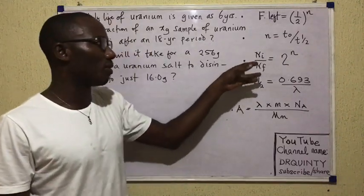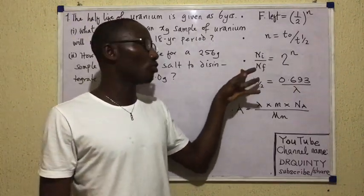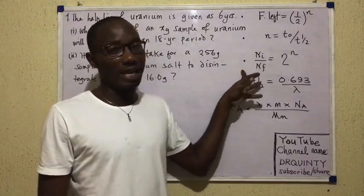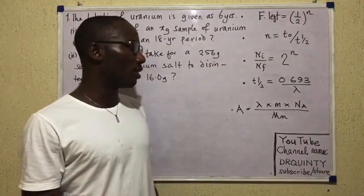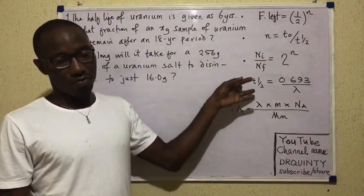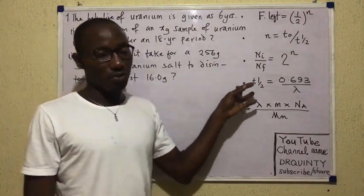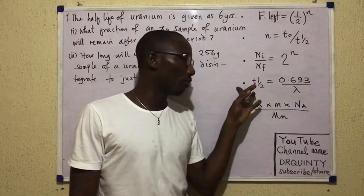On this side, we have Ni over Nf equals 2 raised to the power of n. I'll show us how to use this formula. This is a very common relationship that you would have mastered from long before now.